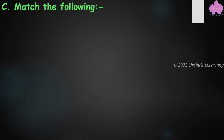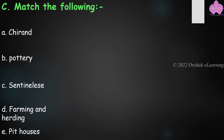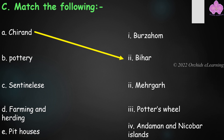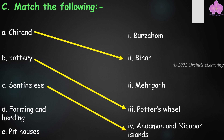Match the following. Look at the options in Column 1 and Column 2. Answers: Chirand — Bihar; Pottery — Potter's wheel; Sentinelis — Andaman and Nicobar Islands; Farming and herding — Mehergarh; Pit houses — Burza Hom.